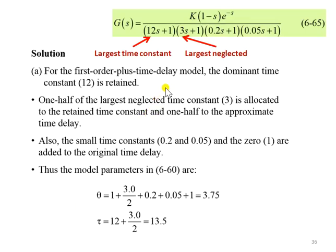So to solve the given problem, we first identify from the transfer function here, this is the largest time constant which is 12, and this is the second largest time constant which is 3, and this will be neglected. So we call it largest neglected time constant.